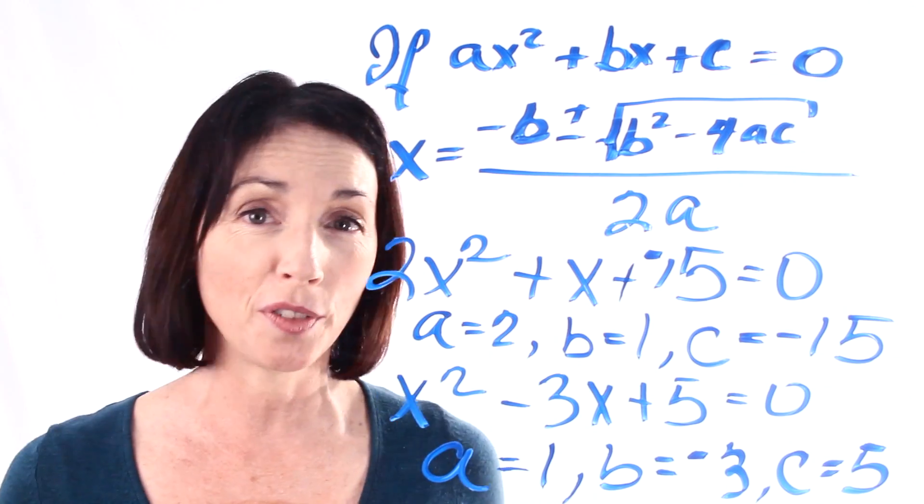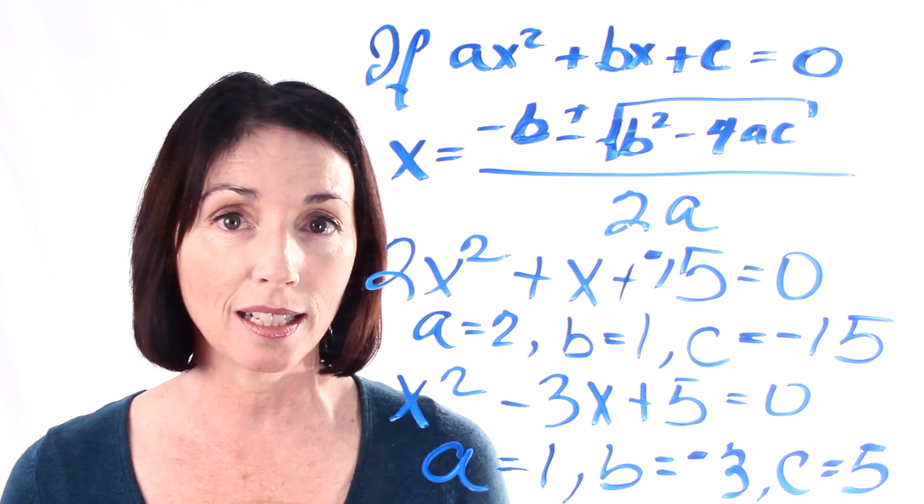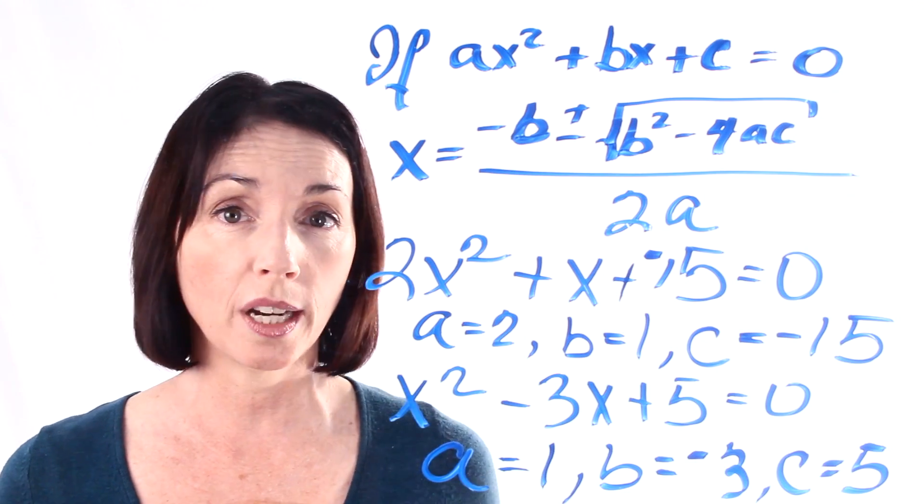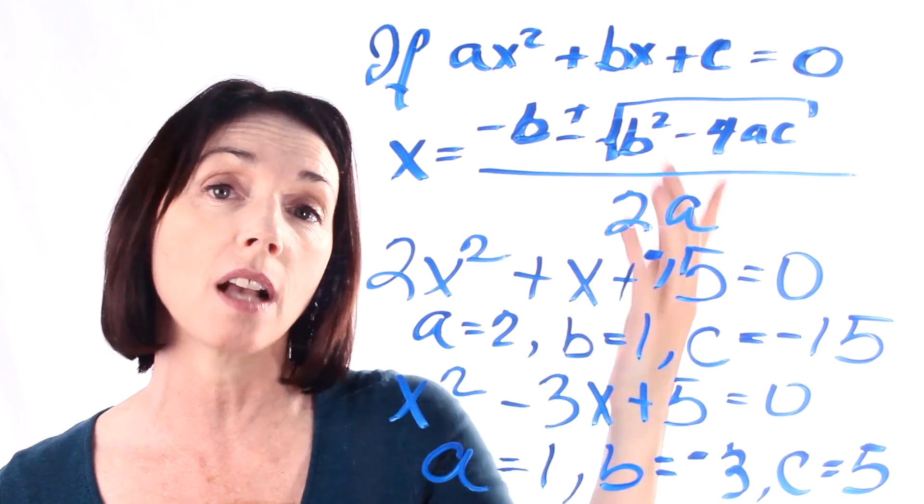Now, this might seem like a trivial step going through and just writing down what a, b, and c are. But it actually isn't. It's actually really important. The whole quadratic formula depends on the values of these two coefficients and this constant.